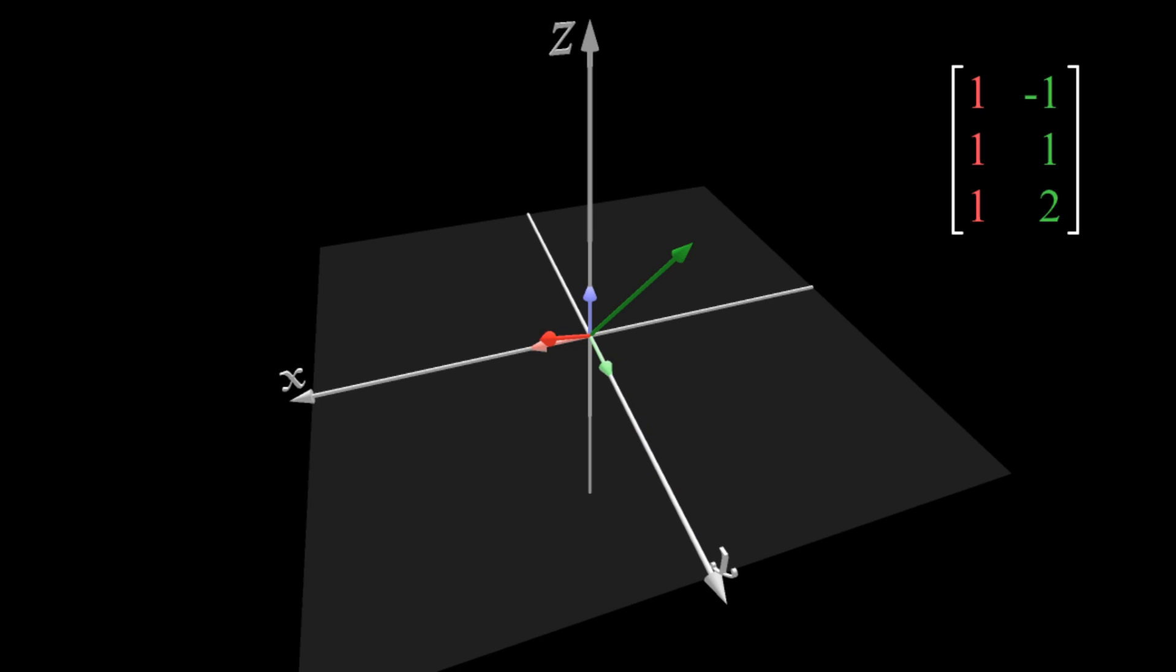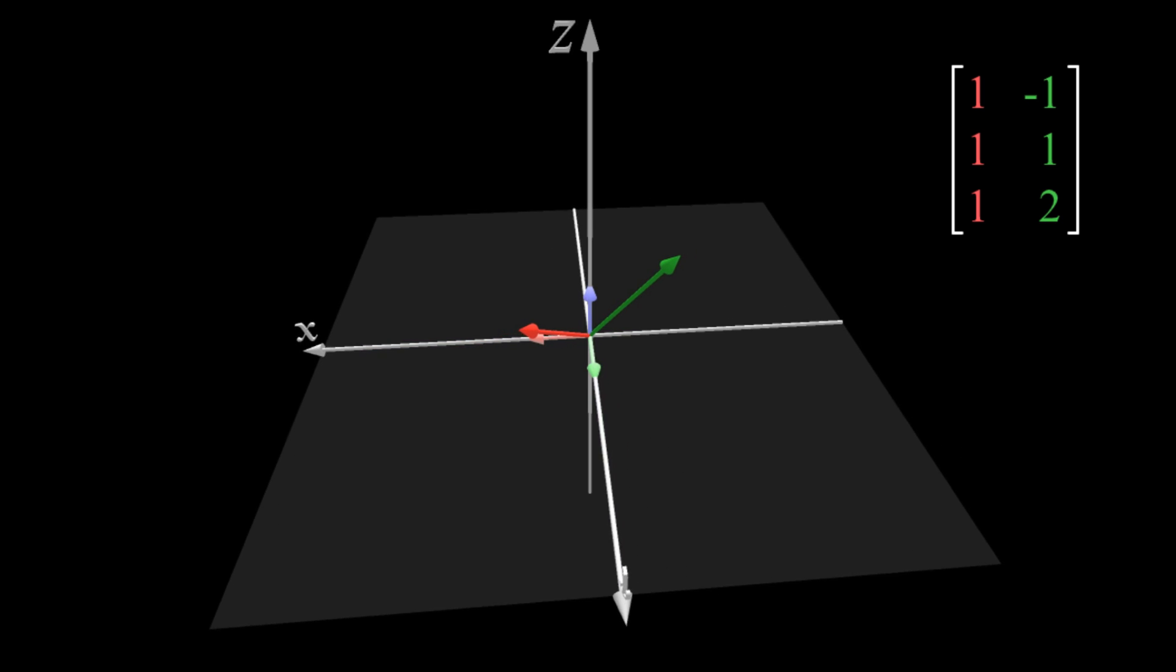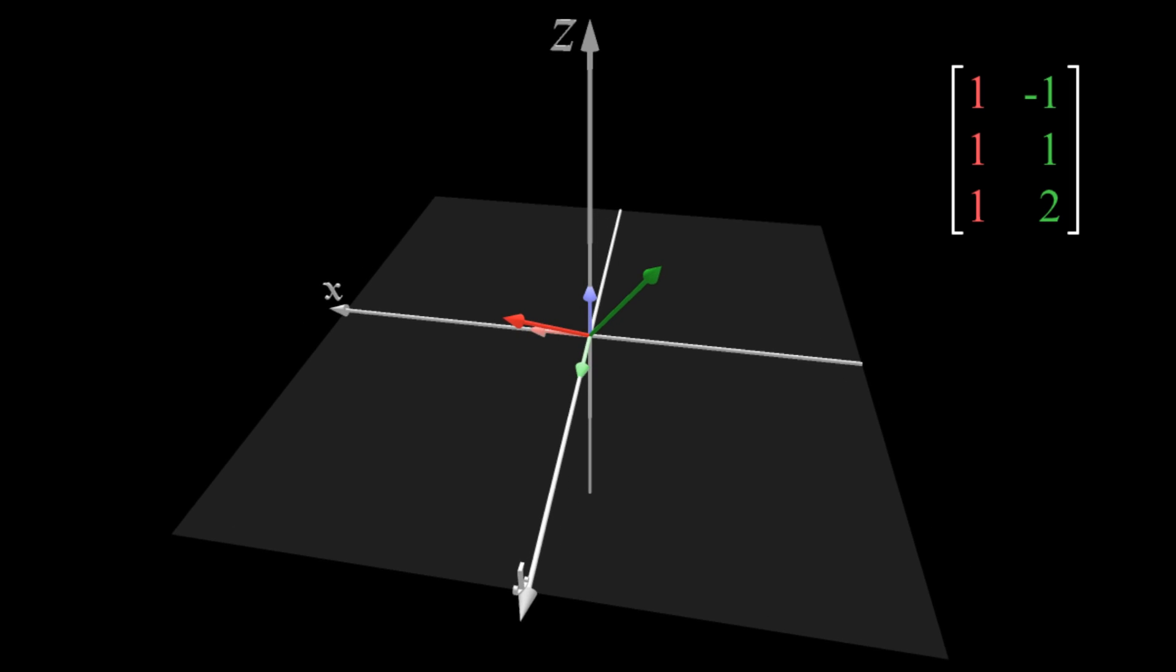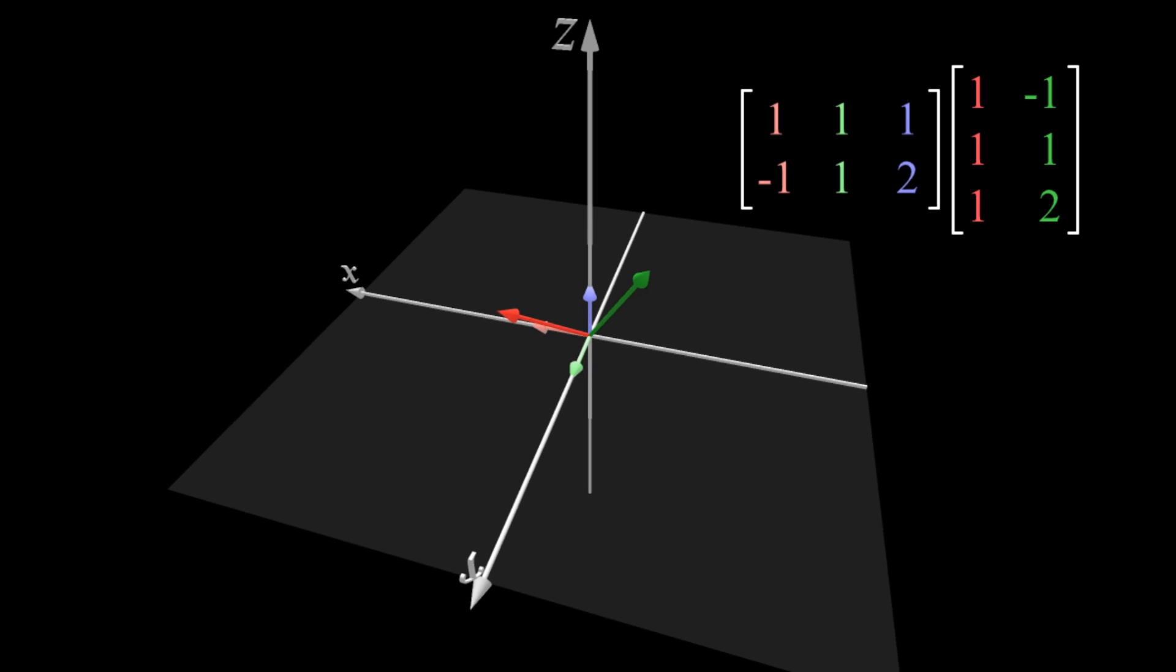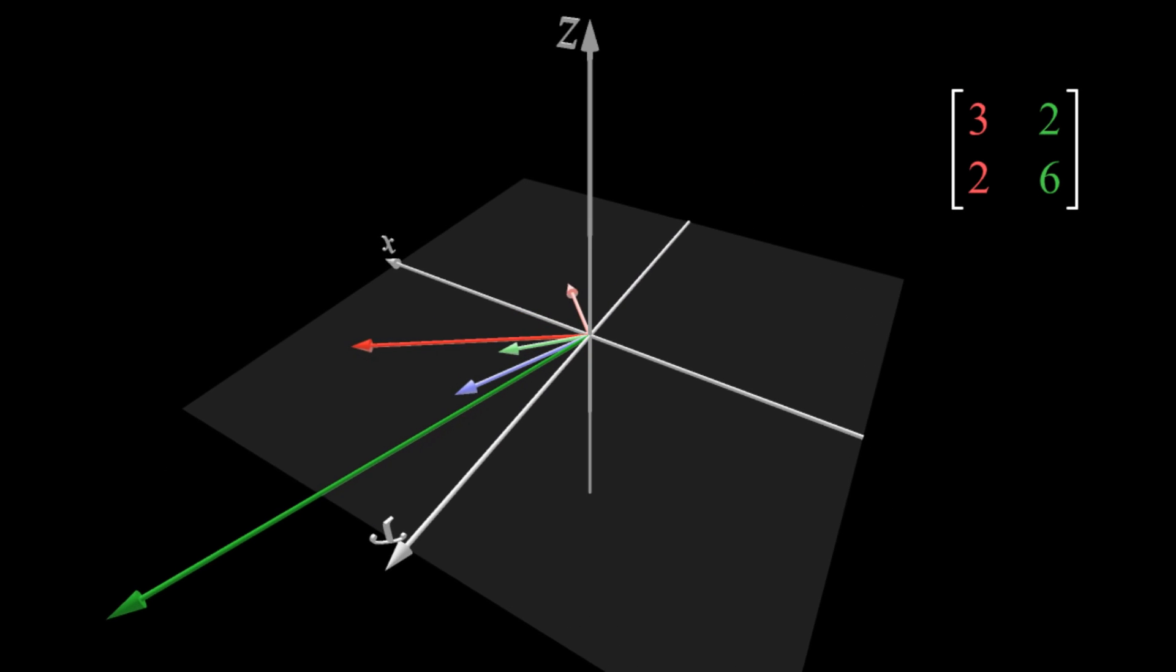Taking things one step further, when you have a 3 by 2 matrix, this basically says you have two 3D vectors. In this context, what X transpose does is essentially transforming each of these two vectors at the same time.